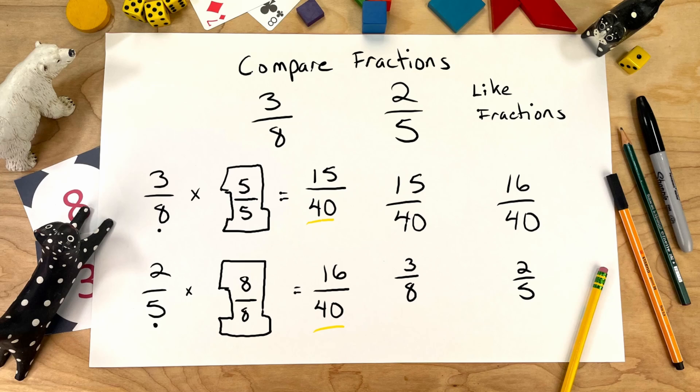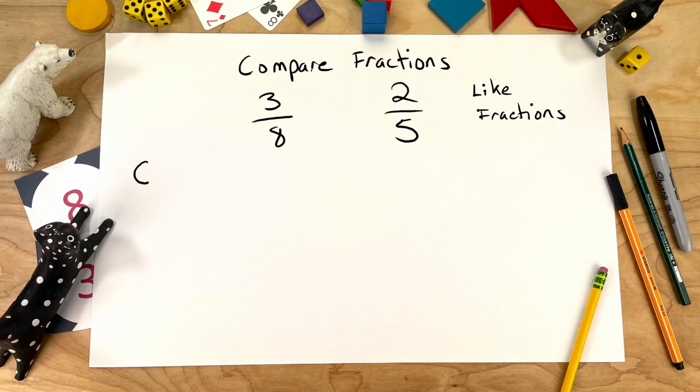Let's look at another kind of comparison. Which one is greater? We know 3 eighths is the same as 15 fortieths. And we know 2 fifths is the same as 16 fortieths. And we know that 16 fortieths is more than 15 fortieths. So we can say that 2 fifths is greater than 3 eighths.